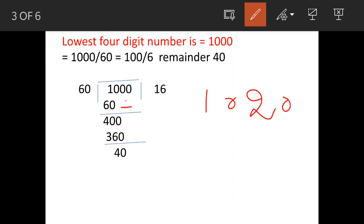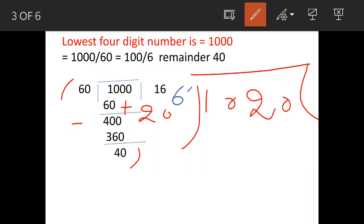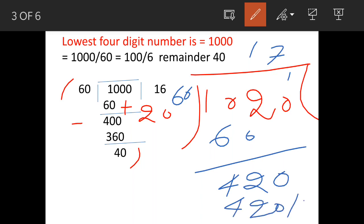1020 - we have added here 20, the difference of these two numbers. So we'll now divide this by 60 again. So 60 into 1, balance is 42, we carry over 0, and 60 into 7 is 420, so the remainder is now 0.